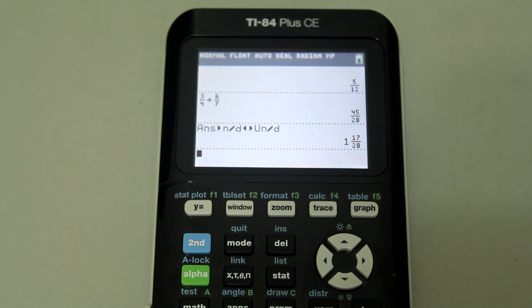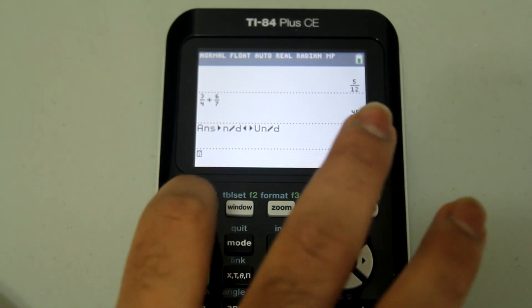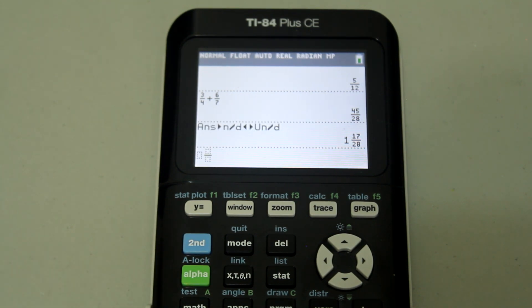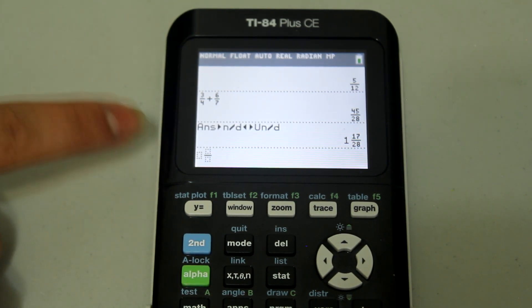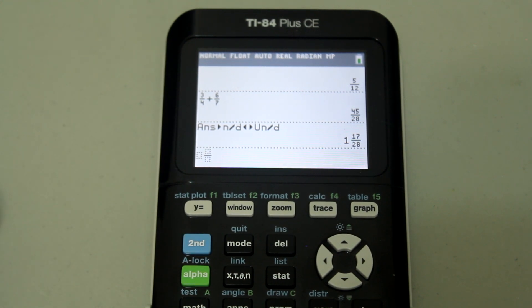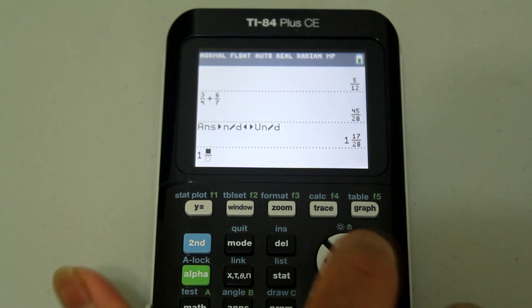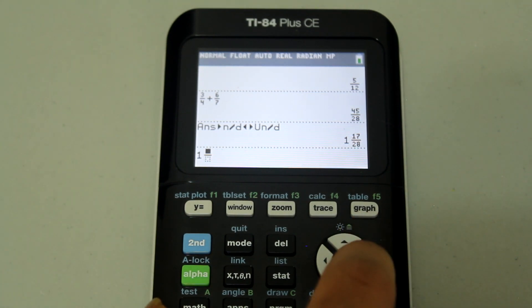Now if you wanted to make a calculation in mixed numbers, go into the menu again, alpha y equals, and that brings up the menu, select the second option and now you see that you can type in a whole number and then a fraction. So let's do one and one sixth, one arrow right, one arrow down, six arrow right.